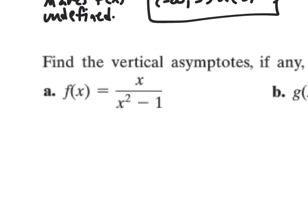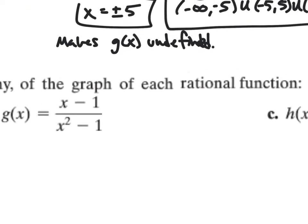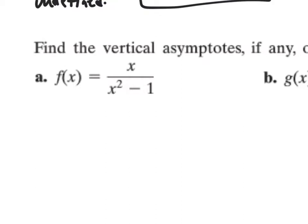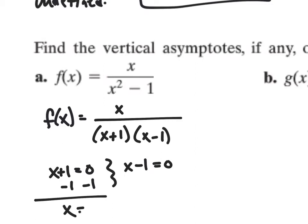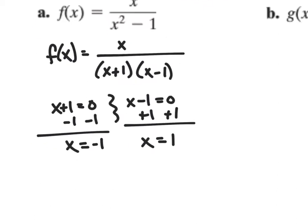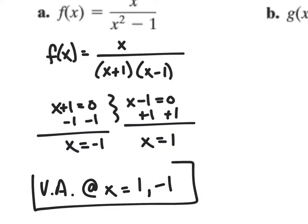Now let's look at the next section: find the vertical asymptotes, if any, of the graph of each rational function. I want to factor each of these. So f(x): the numerator stays as x, the denominator factors to x plus one times x minus one. Since nothing divides out, I set each factor equal to zero and get x equals negative one and x equals positive one. So my vertical asymptotes are at x equals positive one and negative one.